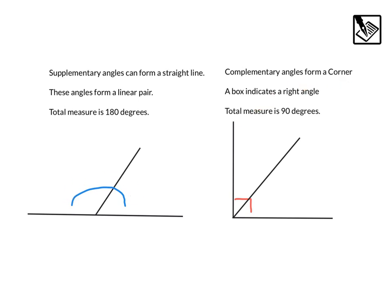Complementary angles form a corner or a right angle. The total measure of complementary angles is always 90.